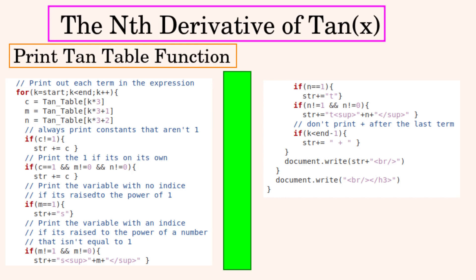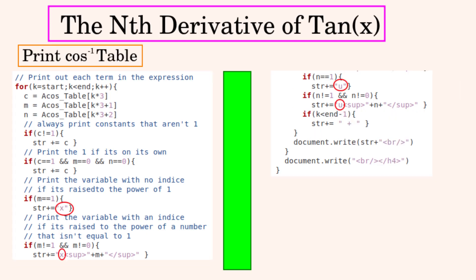And then we'll write out another new line at the end and stop printing in the heading font. And if we swap the letters s and t with x and u then we get a function that can print out the inverse cosine derivative table.